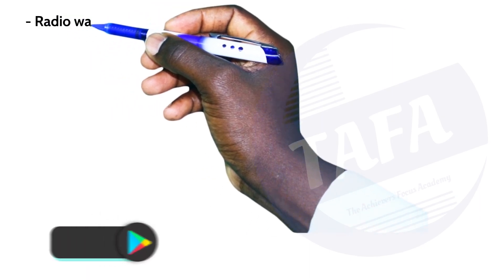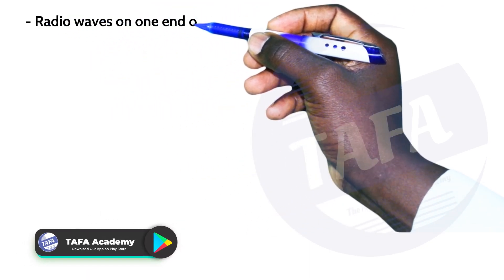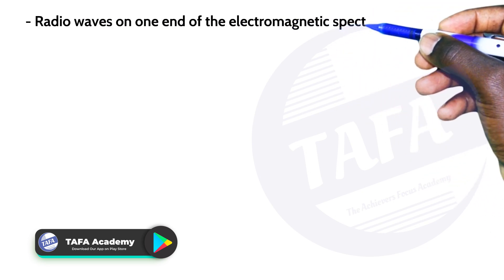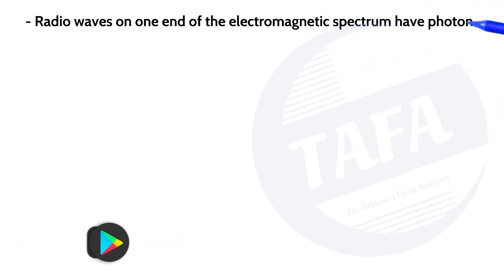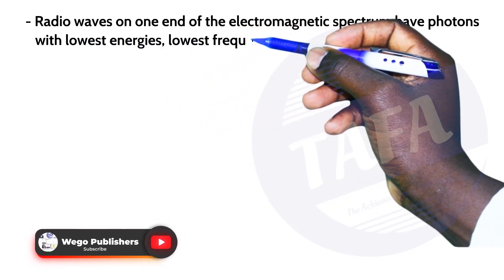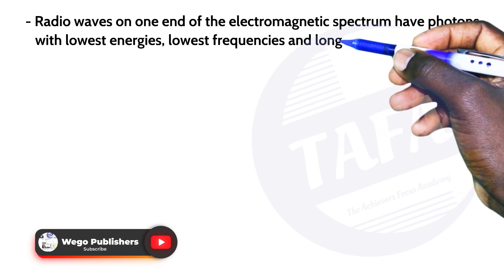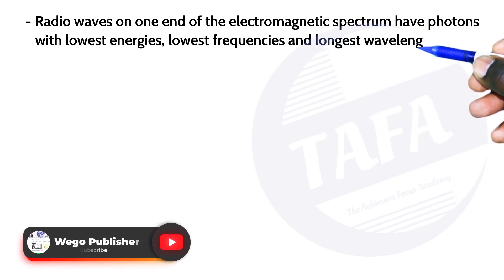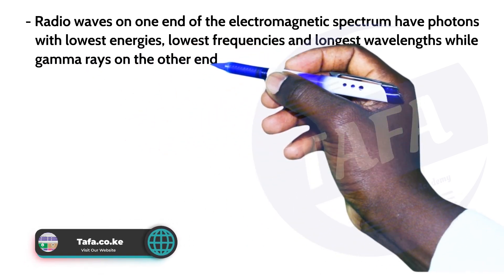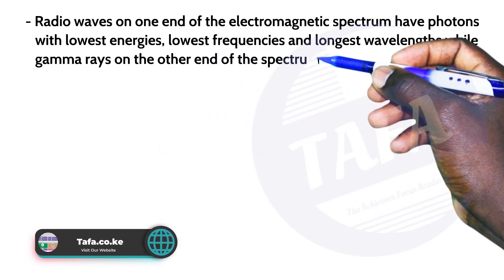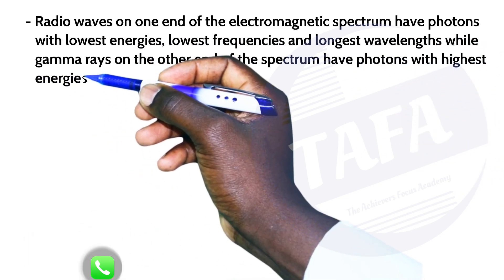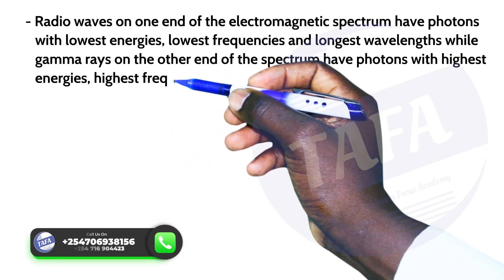Radio waves at one end of the electromagnetic spectrum have photons with the lowest energies, lowest frequencies, and longest wavelengths, while gamma rays at the other end of the spectrum have photons with the highest energies, highest frequencies, and shortest wavelengths.